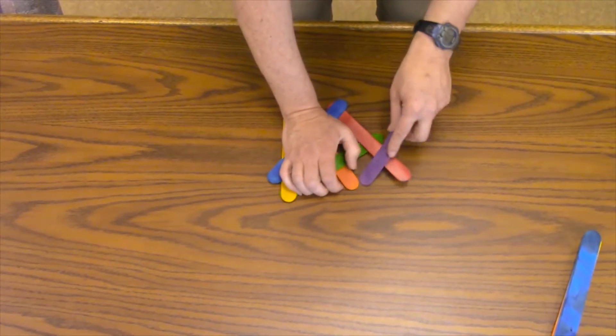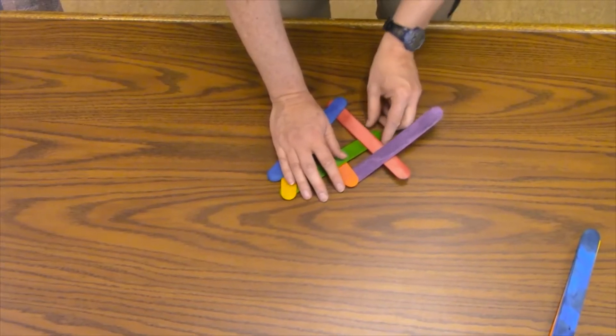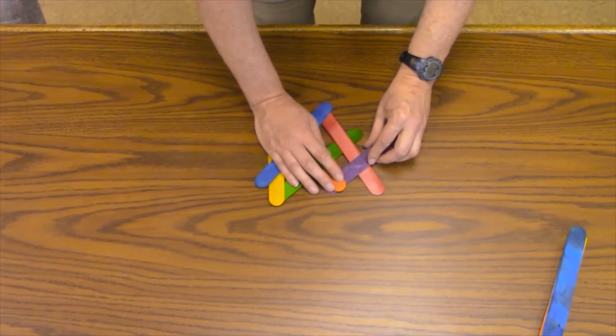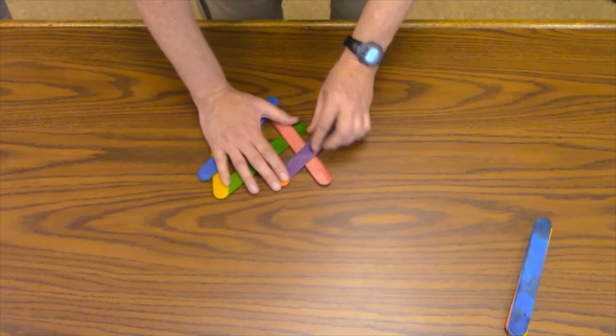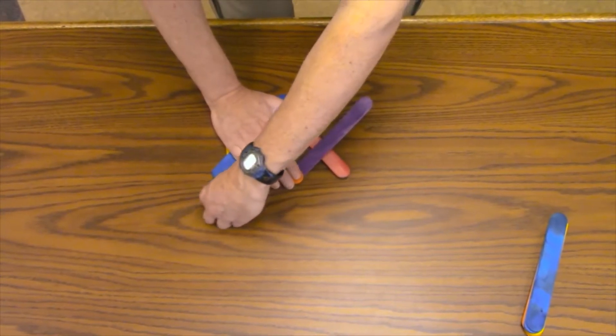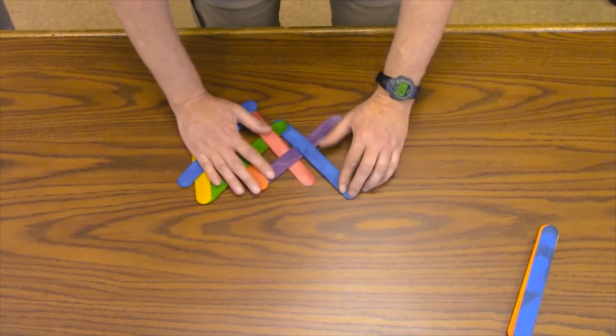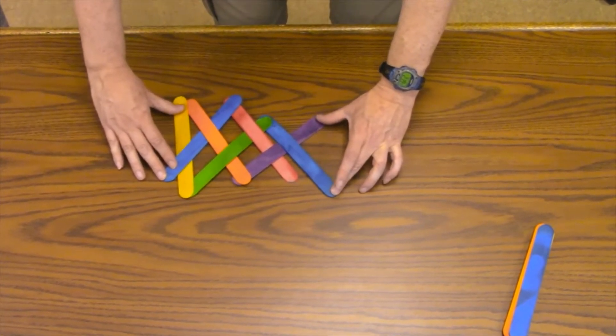Take your purple stick. It goes underneath the orange, but on top of the red. And now we've got a problem right there. The start is always the hard part with this. Hopefully you can see how that's working.